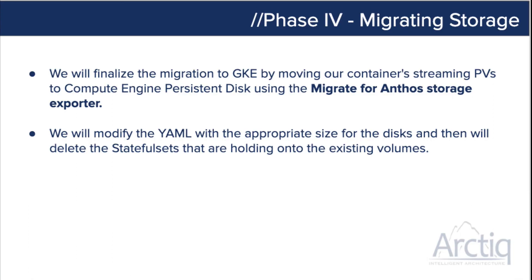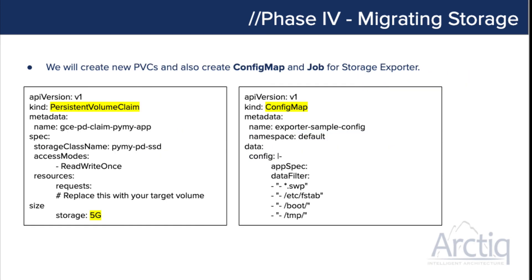Migration is completed and we've validated the application. Now we need to move our persistent volumes over to persistent disk using the Migrate for Anthos storage exporter. We're going to take the YAML config with the existing disks and apply it with a new configuration to move to a persistent volume we'll keep for the application. The next step is to create some new PVCs — persistent volume claims — and a config map. We've got five gigs of storage for the persistent volume claim.